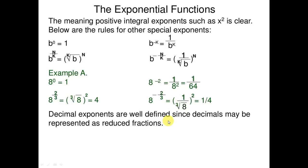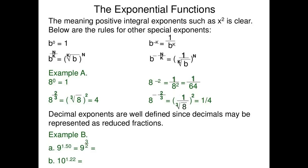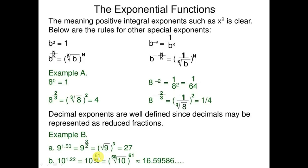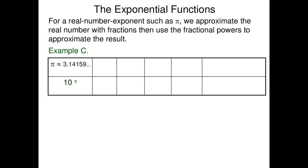Decimal exponents are defined since decimals may be represented as reduced fractions. For example, 9 raised to power 1.50 equals 9 raised to power 3/2, that is 27. 10 raised to power 1.22 equals 10 raised to power 61 over 50, that is approximately 16 point something.